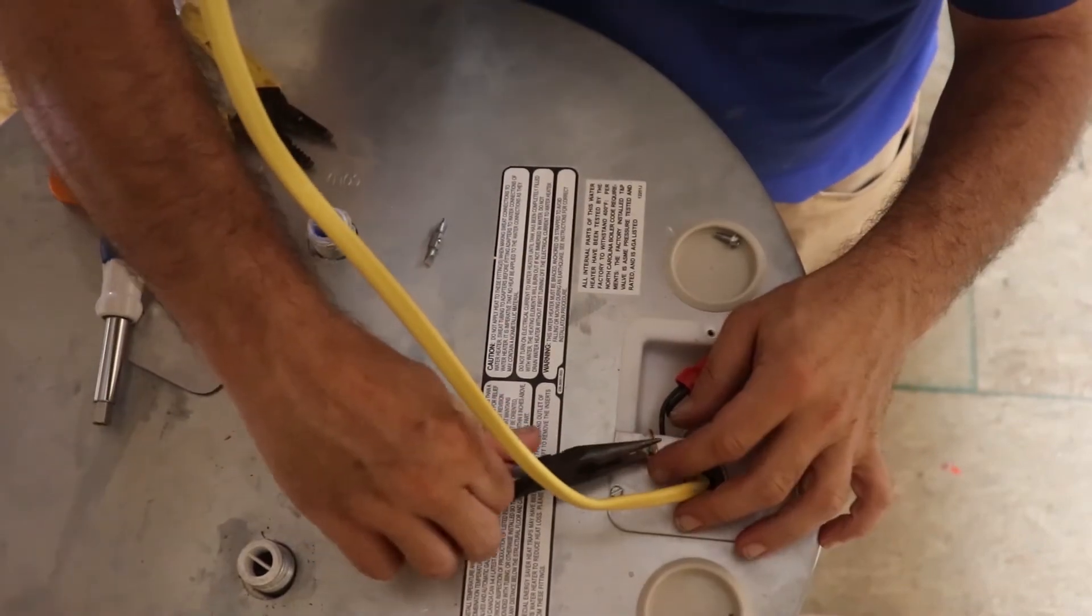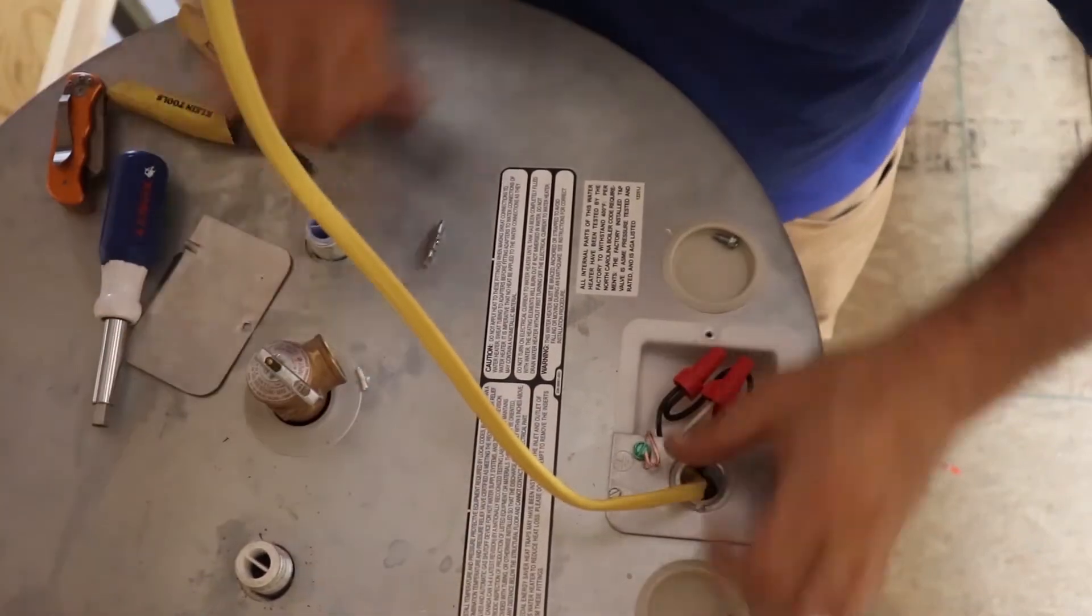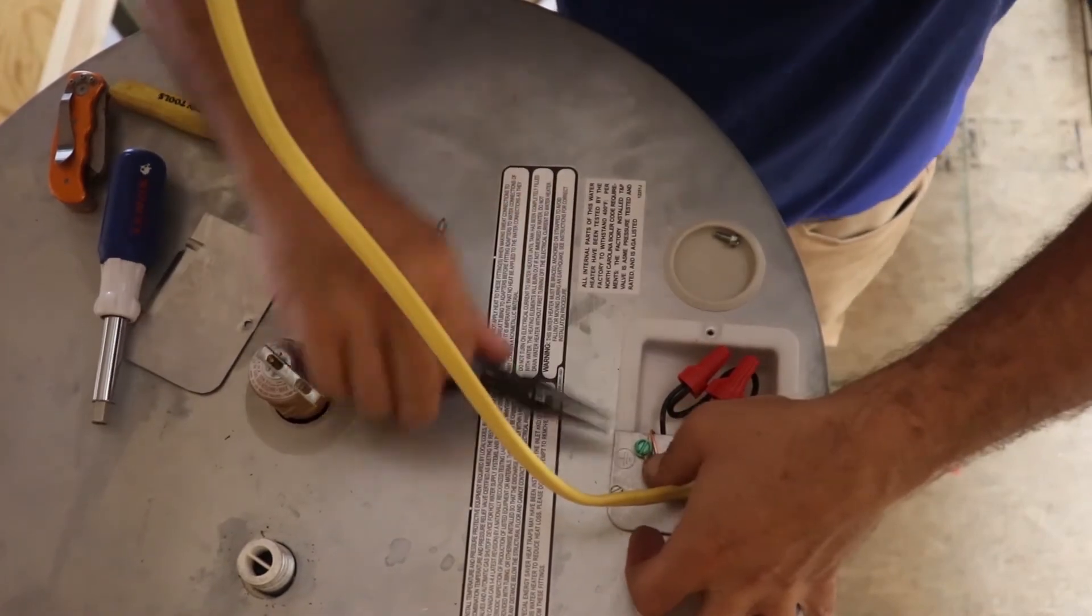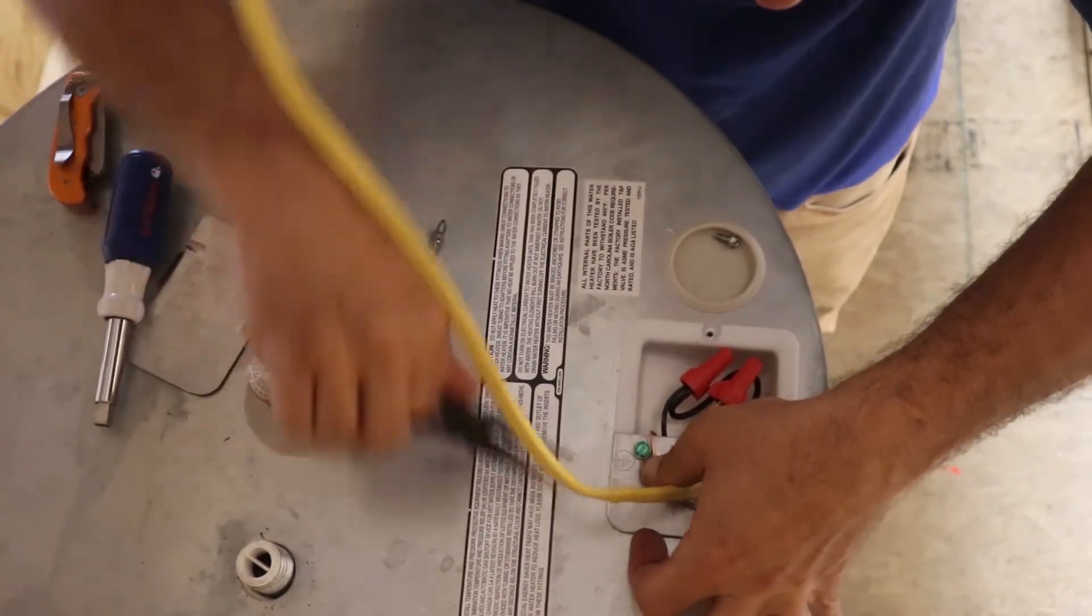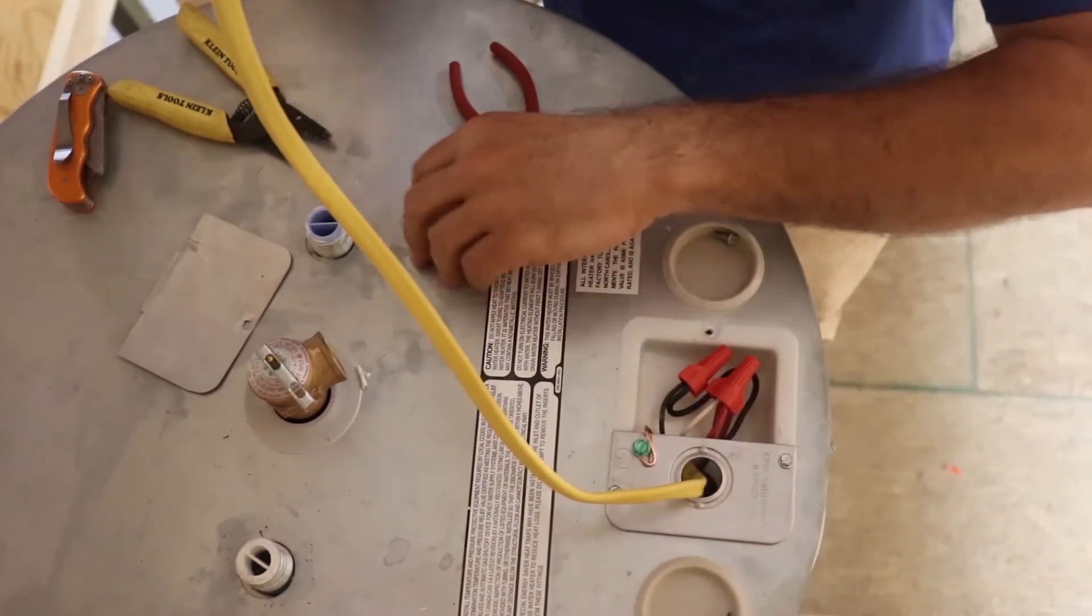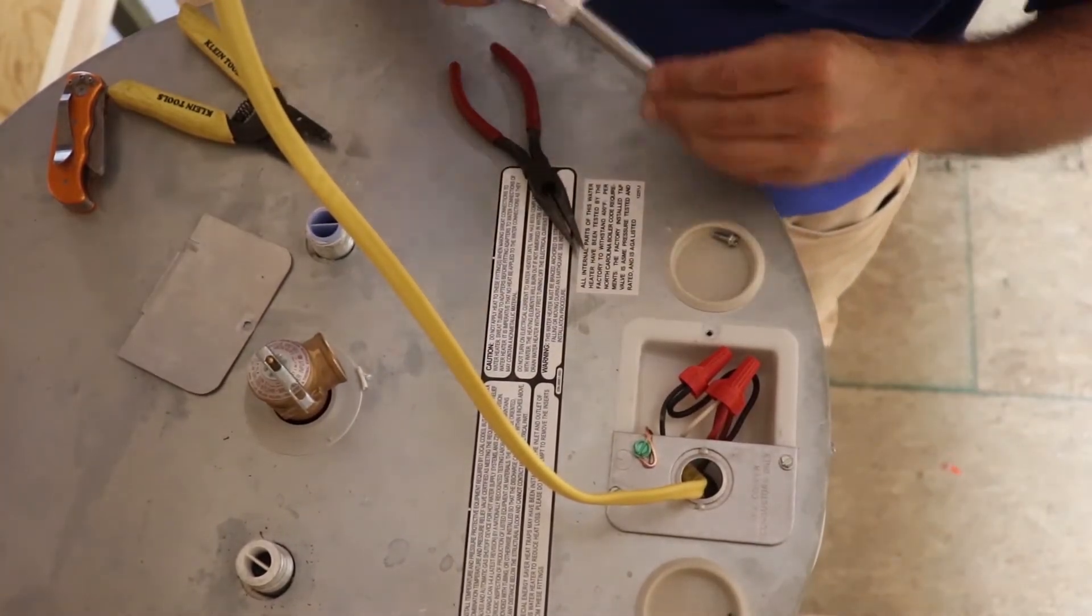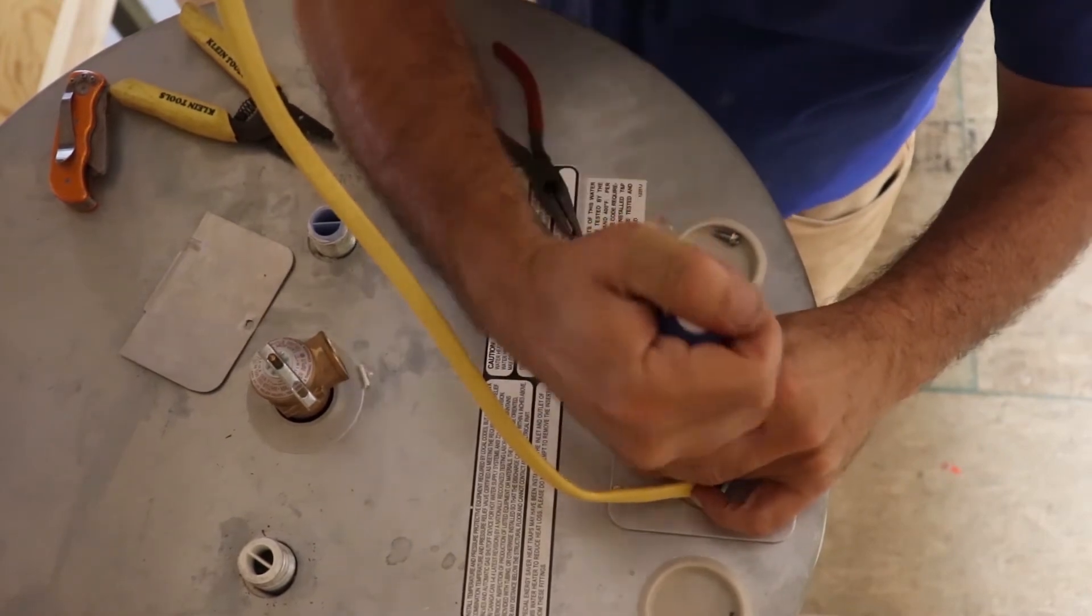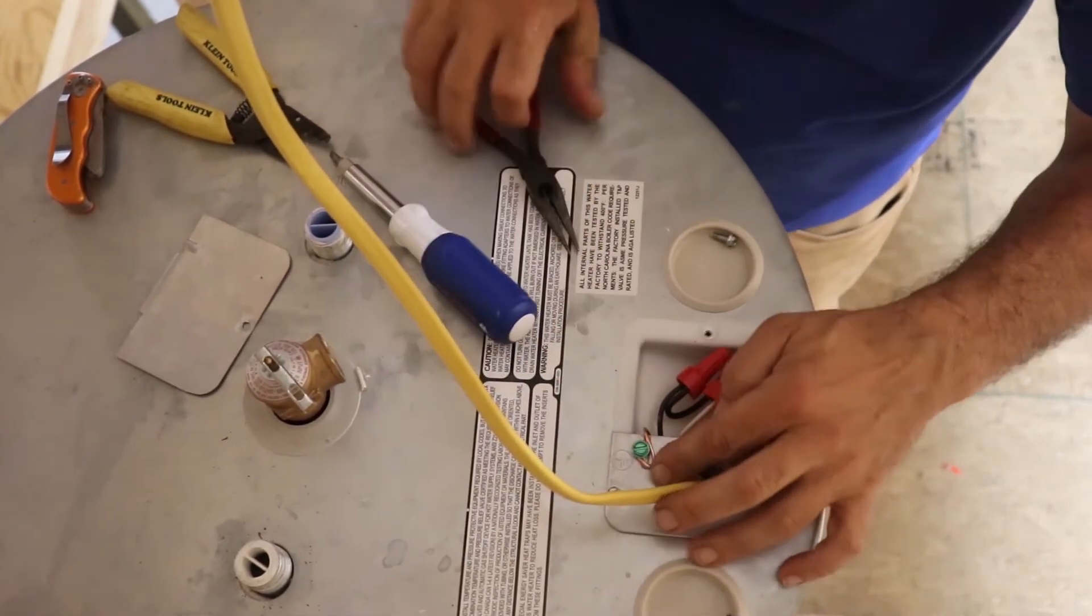But go ahead, bend it, use your needle nose, bend a little loop in it and push it down and under that screw. We may have to loosen our screw up a little bit here. This is because the angle we're coming at, but there it goes.